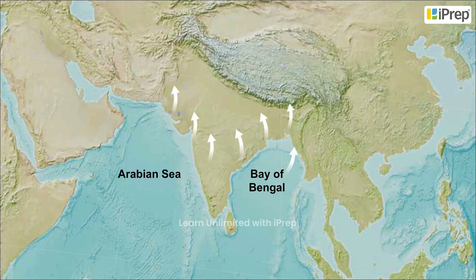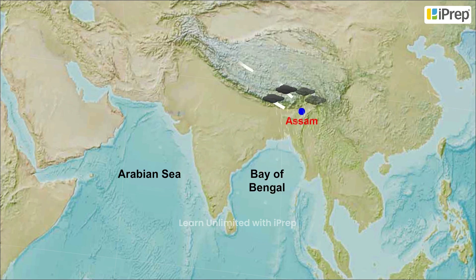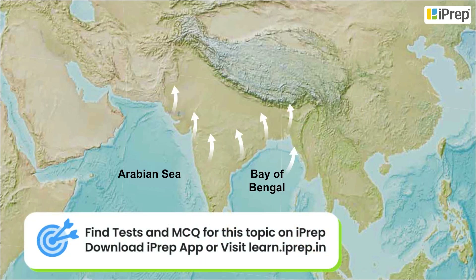The Bay of Bengal branch too reaches Assam by the first week of June. It gets deflected by the mountain ranges and turns towards the Gangetic Plains. Both the branches meet over the northwestern part of the Ganga Plains.